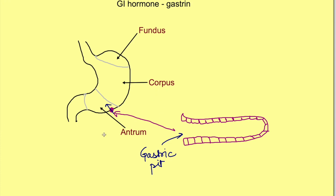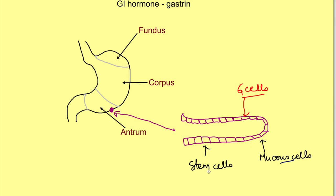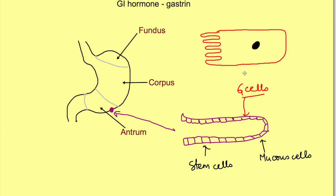The gastric glands are present here. Some of these are mucus cells, there are stem cells, and there are G cells which secrete gastrin. These G cells are flask-shaped cells, and their apex is thrown into folds which we call microvilli. This apical portion forms the microvilli, which exposes the G cells to the gastric contents.